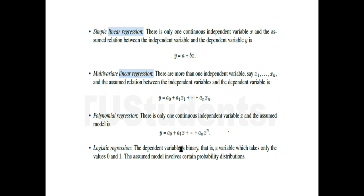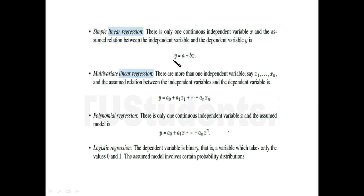To summarize: simple linear regression has one continuous independent variable x; multiple linear regression has multiple independent variables; polynomial regression uses polynomial terms like a1x plus a2x-squared; and logistic regression has a binary dependent variable.